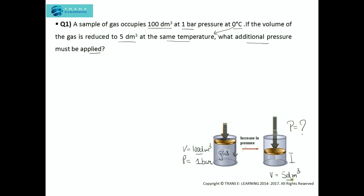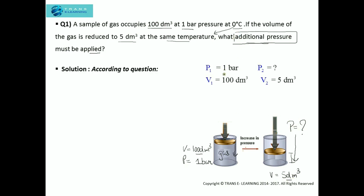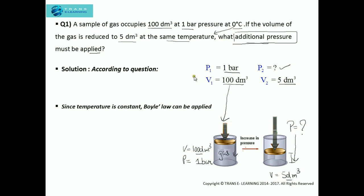After that we can find the additional pressure. Pressure one is one bar and the volume is 100 decimeter cube, as you can see in the cylinder. Volume two is five decimeter cube, and we need to find the pressure corresponding to that.